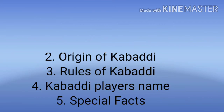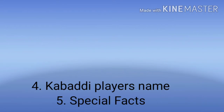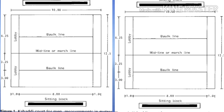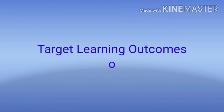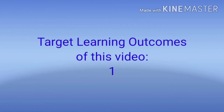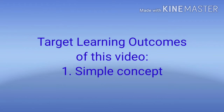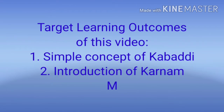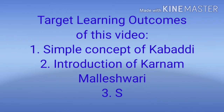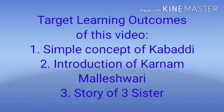So in this video, we are going to know some special concepts. After finishing the first video, you will know in the second video the following target learning outcomes: Number 1 — simple concept of Kabaddi. Number 2 — introduction of Karnam Malishwari. Number 3 — a story of three sisters. And number 4 — remembering those days.